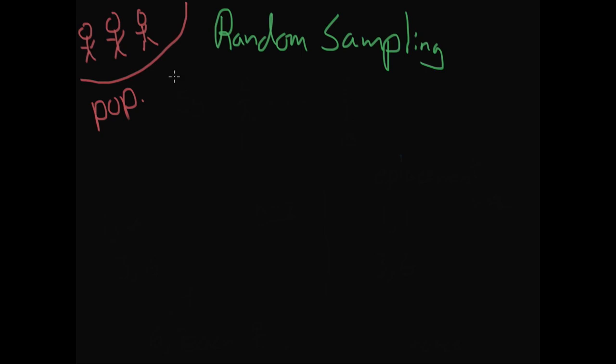So sampling starts off with a population. This is the group of people you're interested in studying. For a school example, it would be all of the members in school. For an example of the U.S. population, it would be the entire U.S. population.